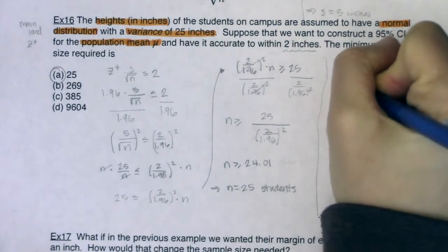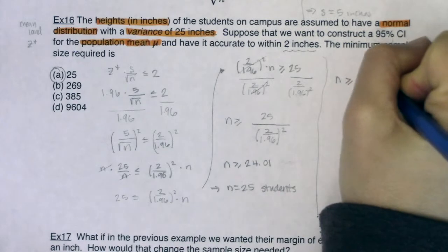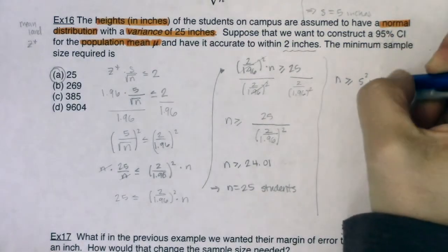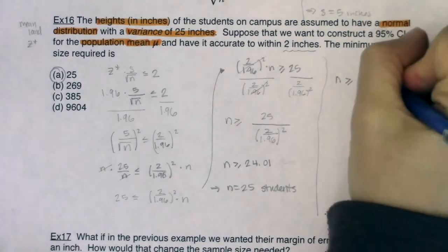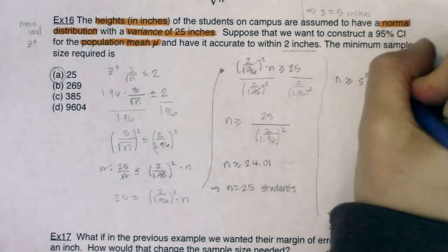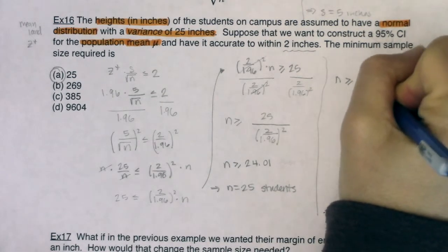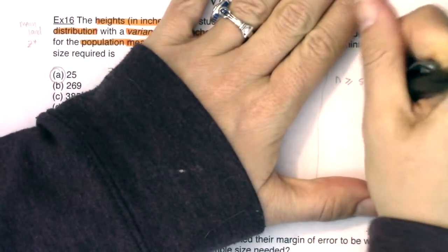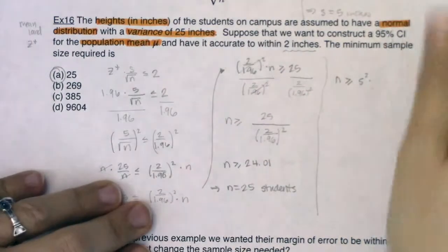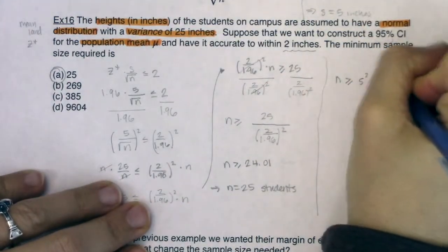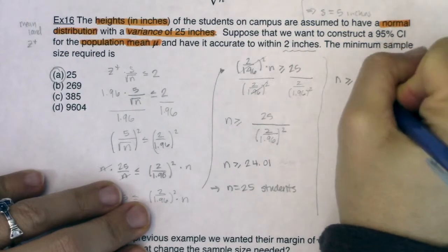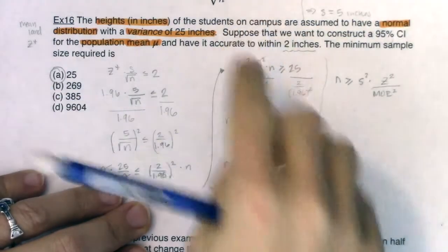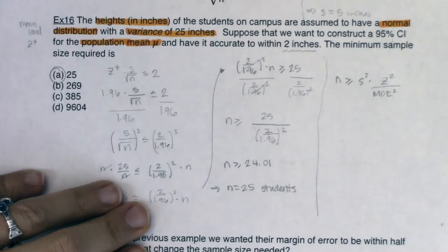You can also, once you see that you have a margin of error problem and you're in mean land, you can say this: n has to be greater than or equal to s squared times z star squared divided by your margin of error squared. So let me write that just a little better. I'll put times z squared, and I'm going to put MOE. I'm just more comfortable with that. Again, your book uses ME for margin of error.